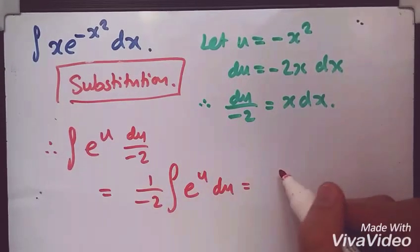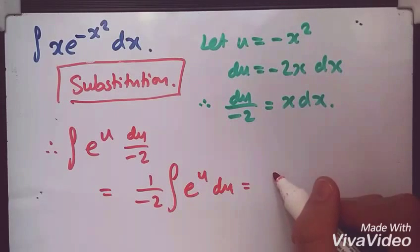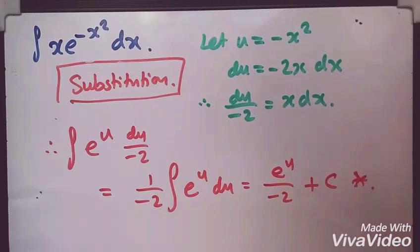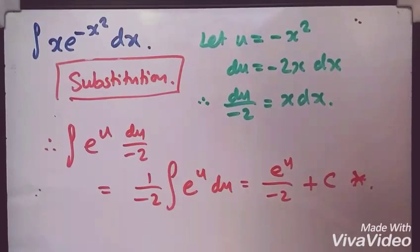So, we're going to get 1 over minus 2, e to the u over negative 2 plus c. And, there we have it. I mean, you can write this in a nicer way, but this is just getting a solution. Hope this helps, guys. Thanks.